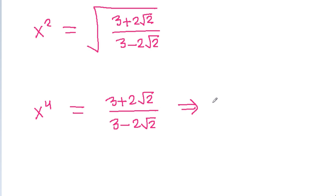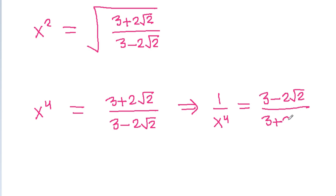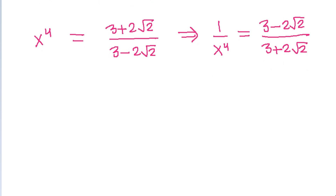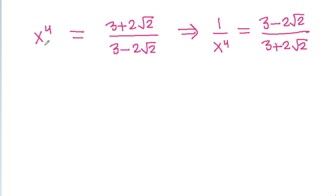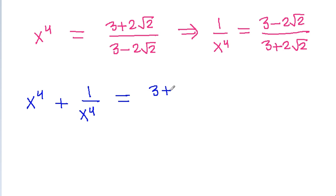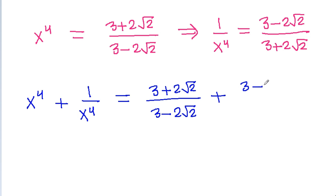From here we can get 1 by x power 4 is equal to (3 minus 2 root 2) by (3 plus 2 root 2). Now if we add x power 4 and 1 by x power 4, then we get (3 plus 2 root 2) by (3 minus 2 root 2) plus (3 minus 2 root 2) by (3 minus 2 root 2).